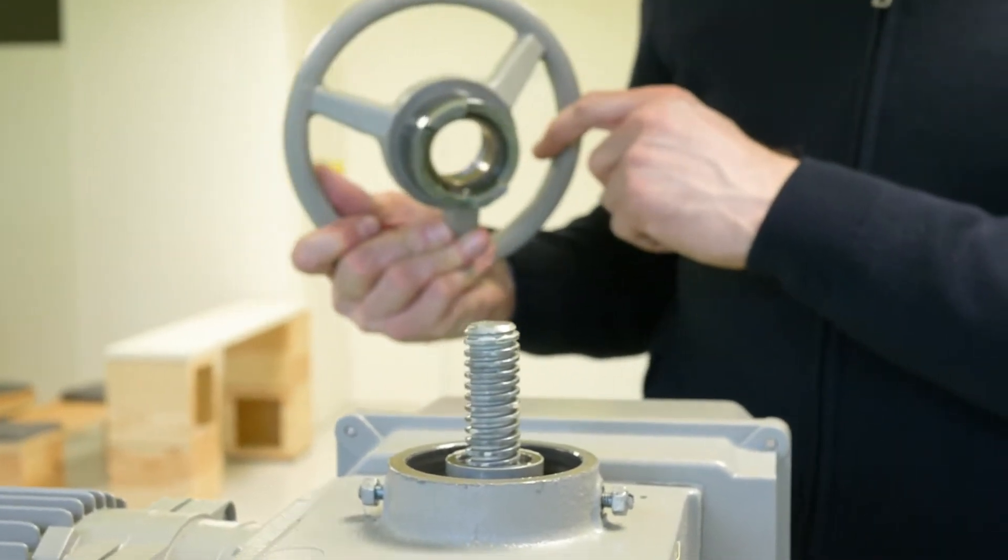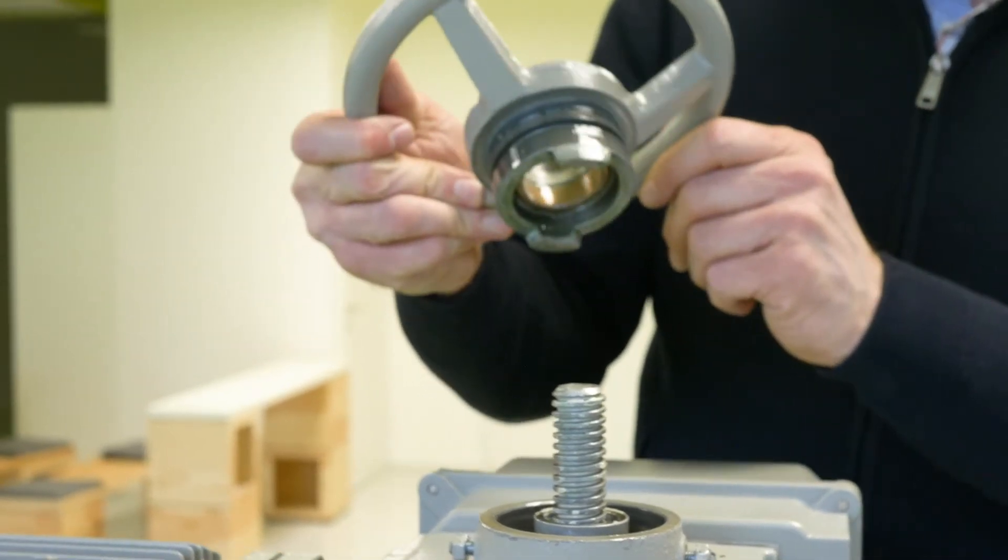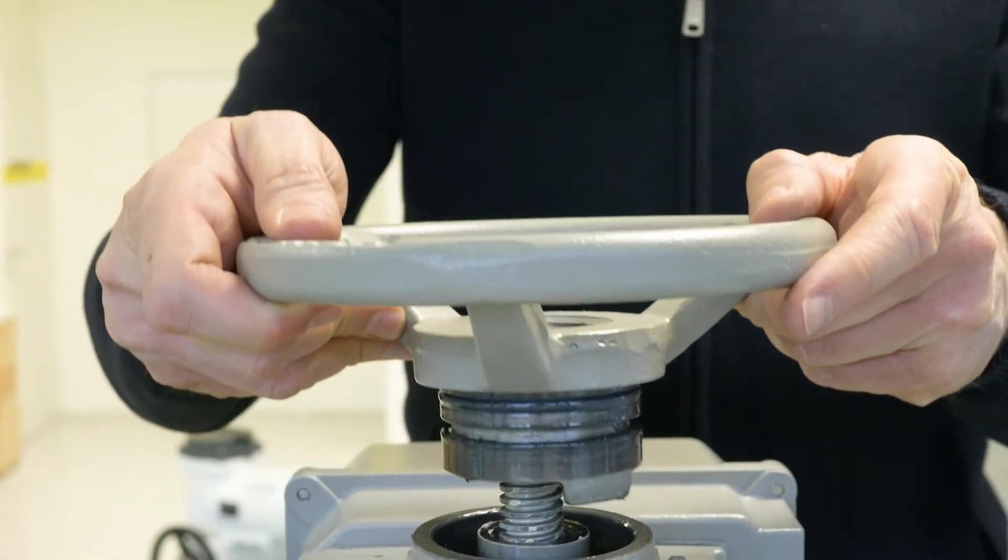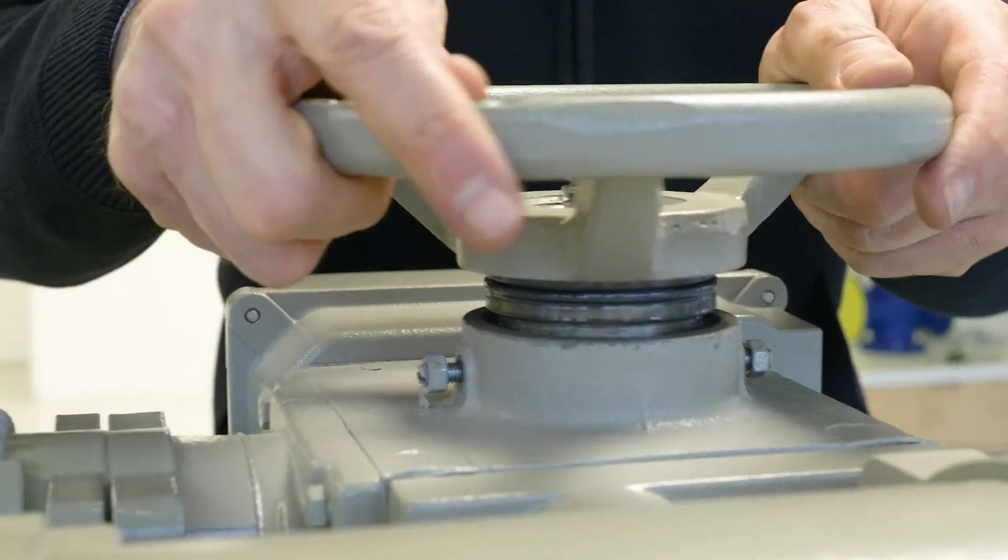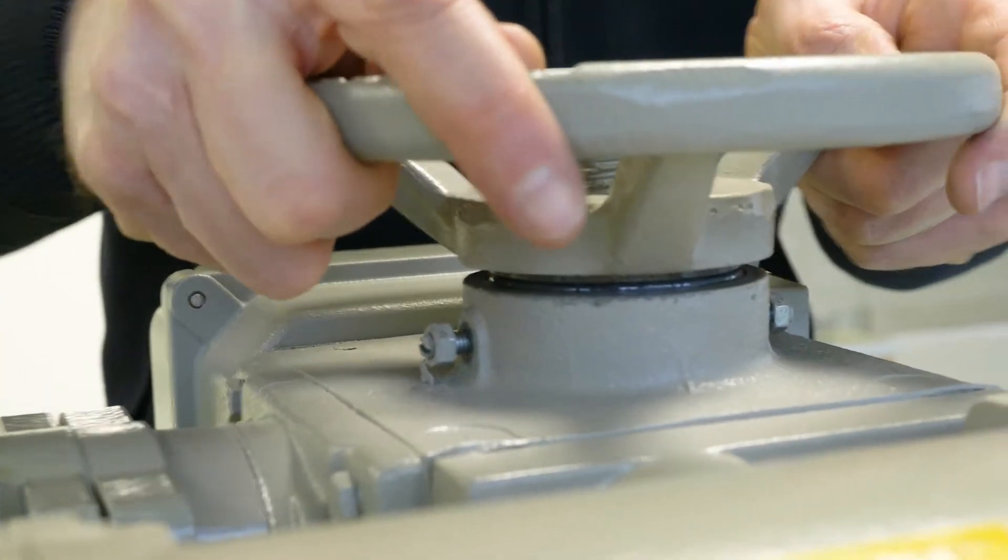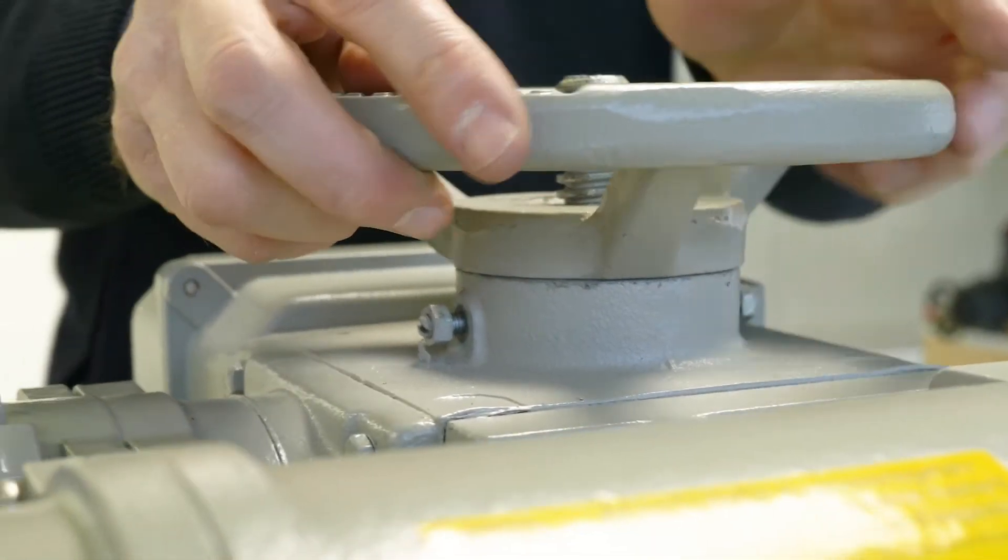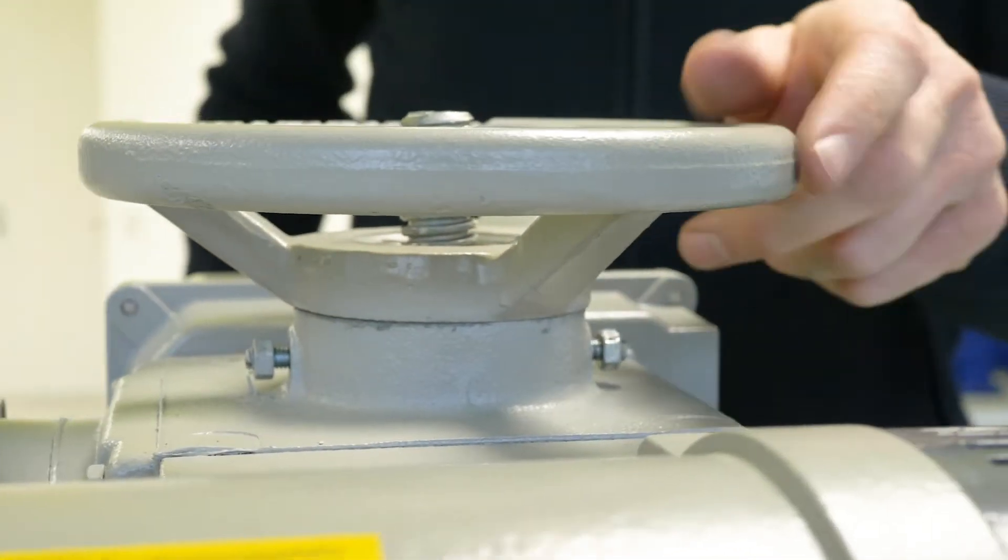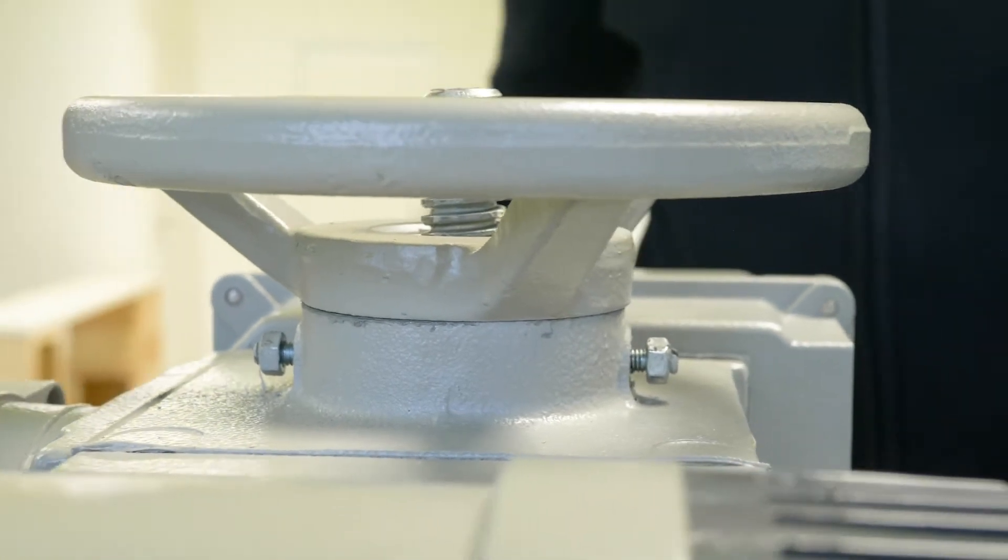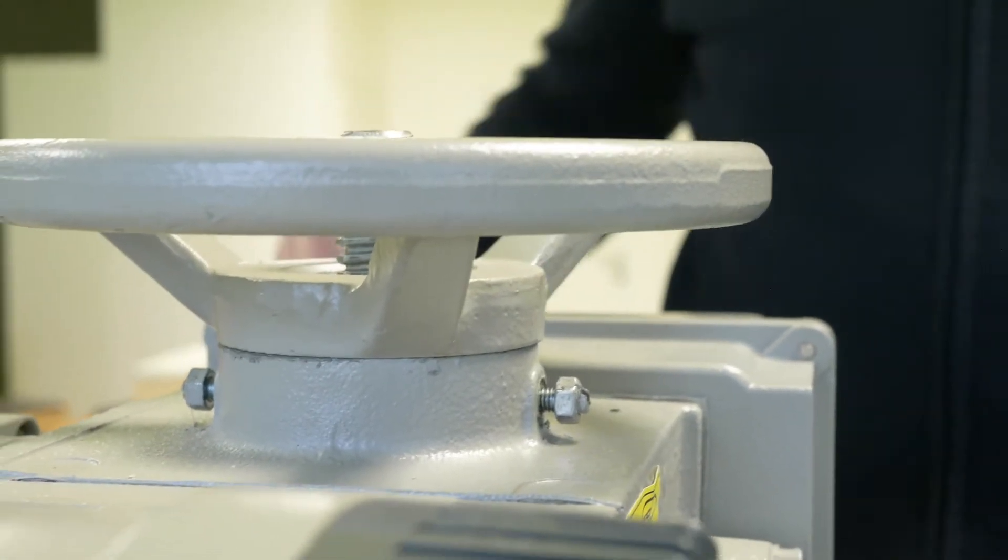When you have the new hand wheel, you give the hand wheel in the actuator housing, press it down, and after this you can tighten the worm screws.